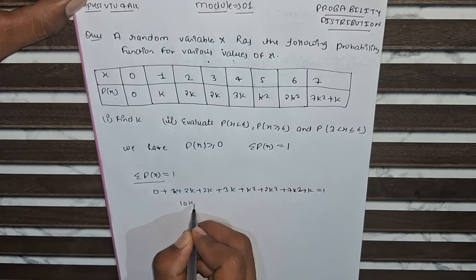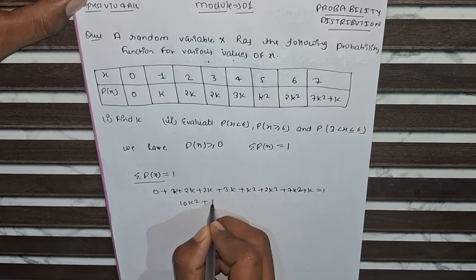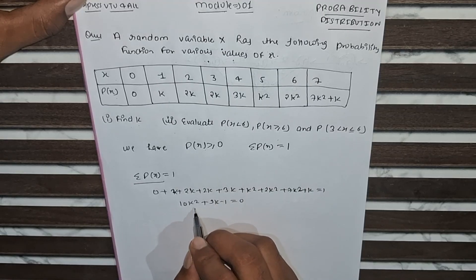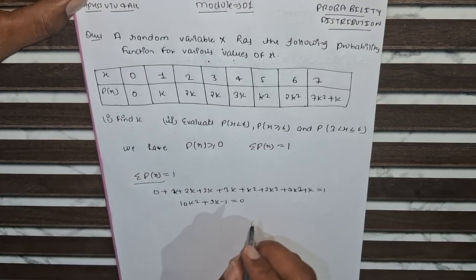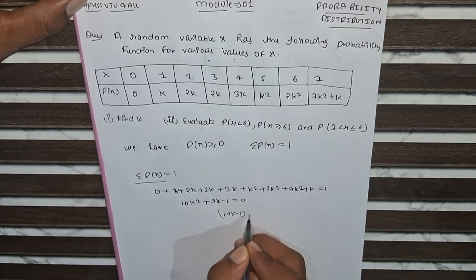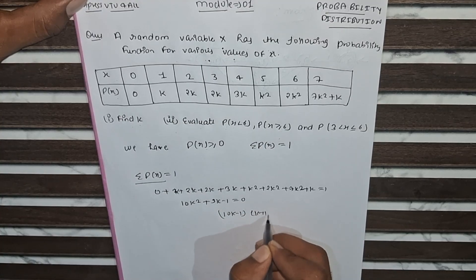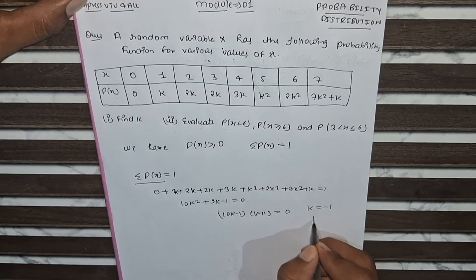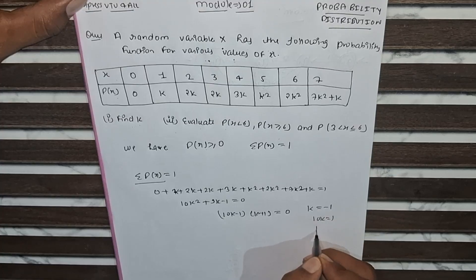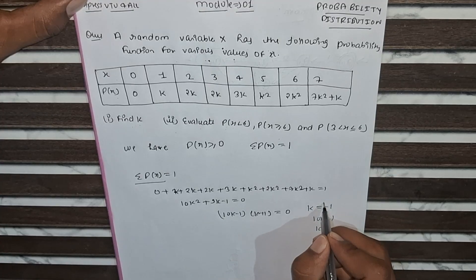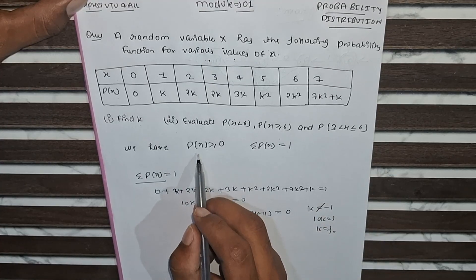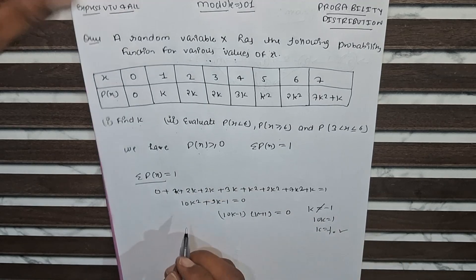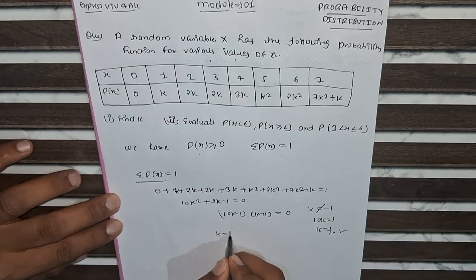This simplifies to 10k² + 9k − 1 = 0. Factoring gives (10k − 1)(k + 1) = 0, so k = 1/10 or k = −1. Since P(X) must be greater than or equal to 0, the negative value is not accepted. Therefore k = 1/10.